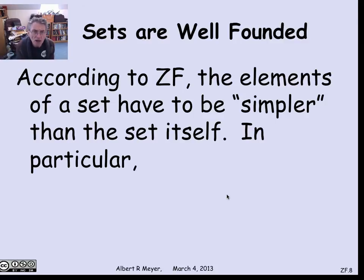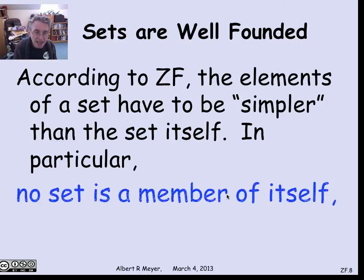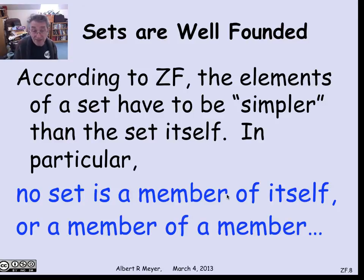Another particularly interesting axiom of ZF addresses self-membership and self-reference. The intuitive idea is that elements of a set must come before the set itself. They have to be simpler. If you're building up a set from successively simpler elements, you can't have a set be a member of itself because then it's not built from simpler things. In fact, you can't even have a set that's a member of a member of itself. All indirect membership is forbidden.